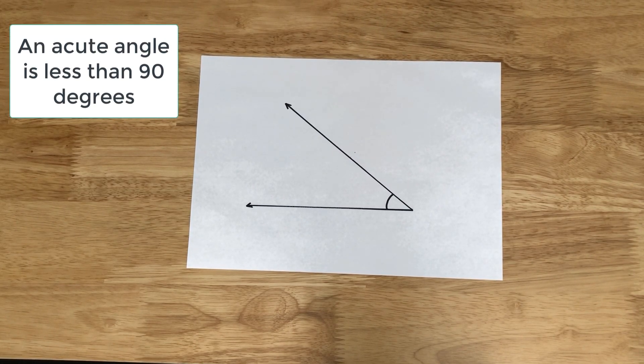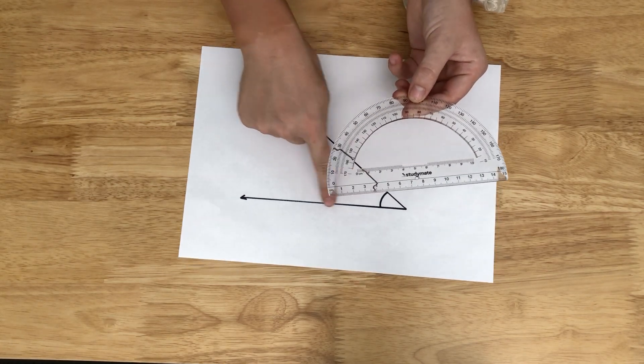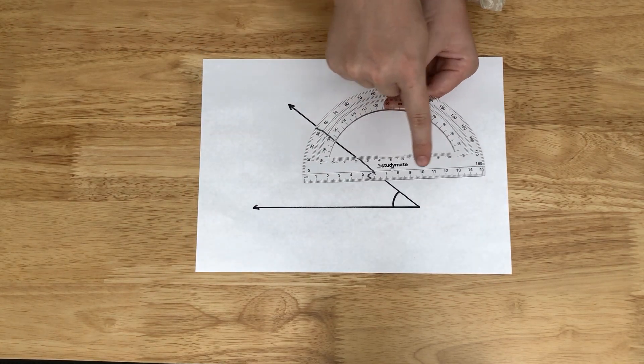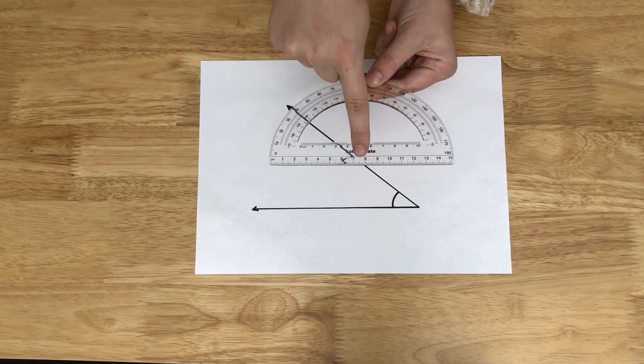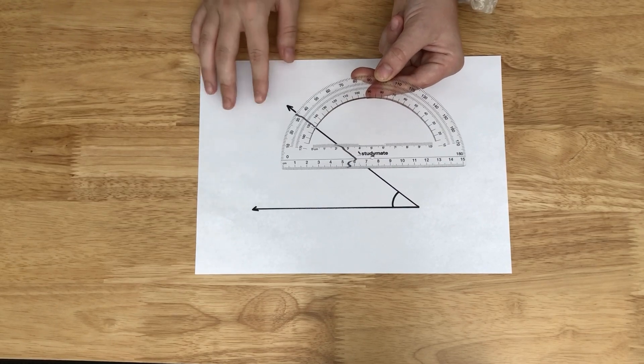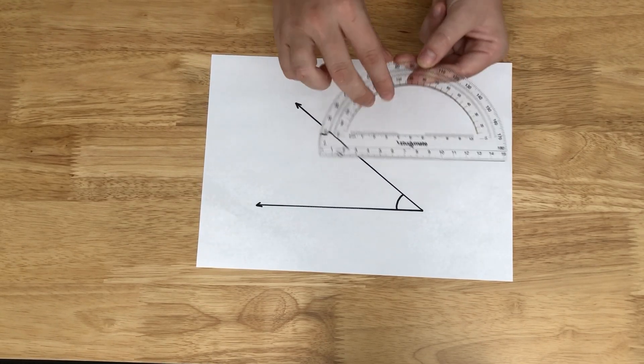Let's measure it using a protractor. To use a protractor, we have to make sure the ray is right on that zero line. In the center, mine's a little circle—you could have a T symbol in the center there. That has to be right on the vertex.